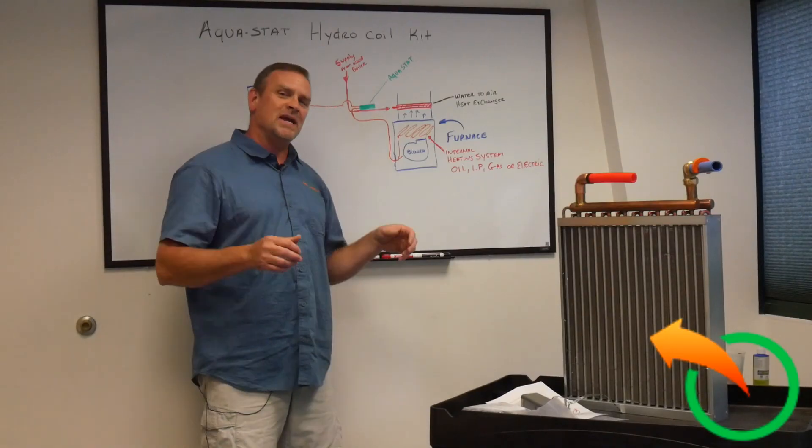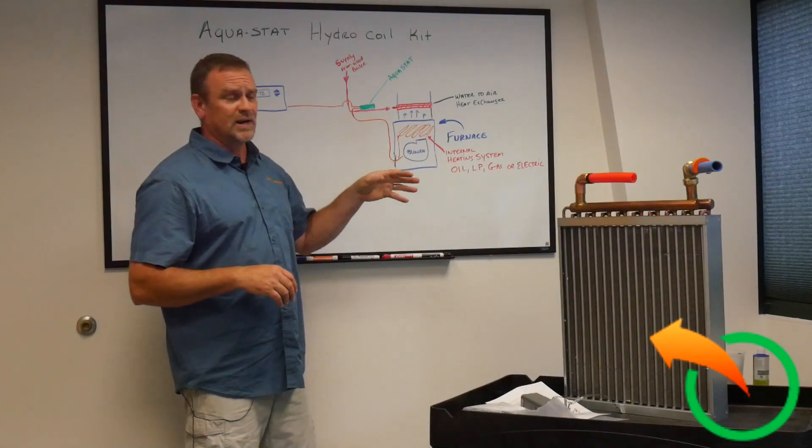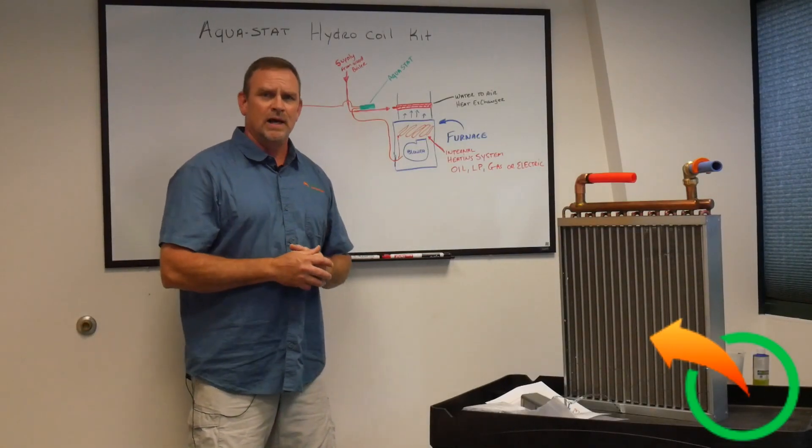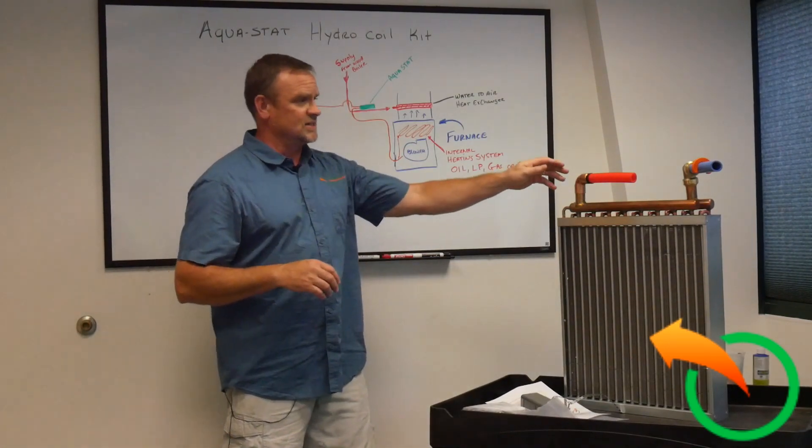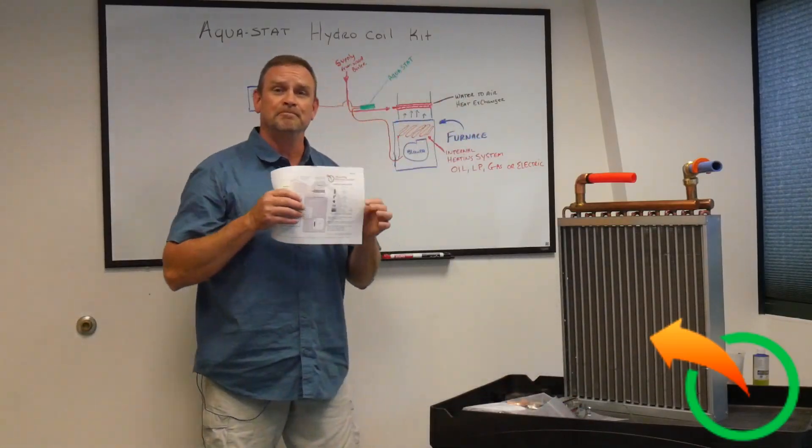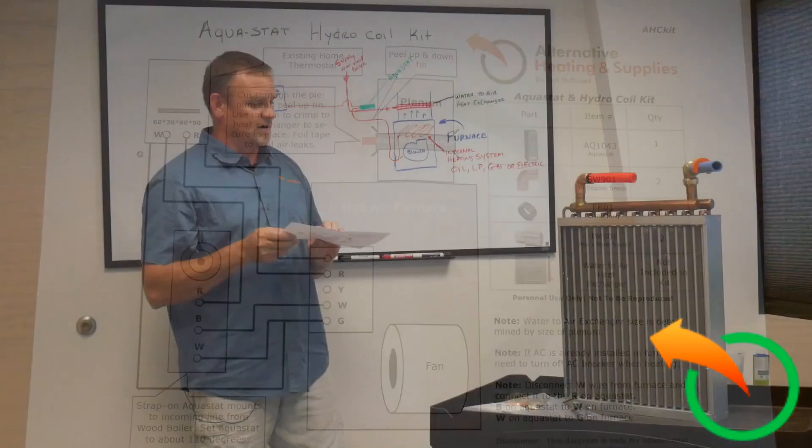So this is the basic Aquastat Hydrocoil Kit that I offer. You can do this obviously on your own, but I found this to be the simplest. My kits are under $100 and they have the Aquastats. They have these fittings and they also have the directions on how to wire it up. So it makes life a lot simpler for everybody.